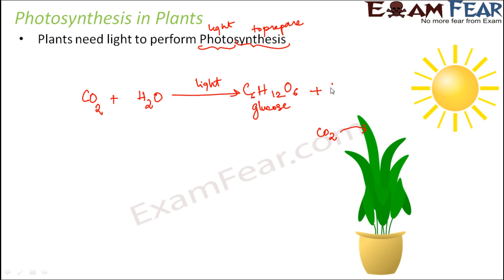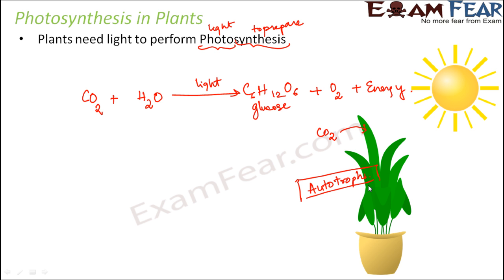Oxygen is also released out, and a lot of energy is produced during the process. Since plants are capable of preparing their own food, they are also known as autotrophs — 'auto' means self, so they are self-dependent for their food. All other animals which depend on plants either directly or indirectly for their food are known as heterotrophs.